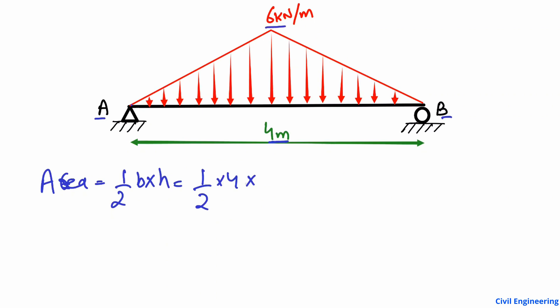The base is 4 meters, which is the length of the beam, multiplied by the height of 6 kilonewtons per meter. The meter units cancel, and multiplying gives us 12 kilonewtons. So the total load acting on this beam is 12 kilonewtons, acting at the midpoint.